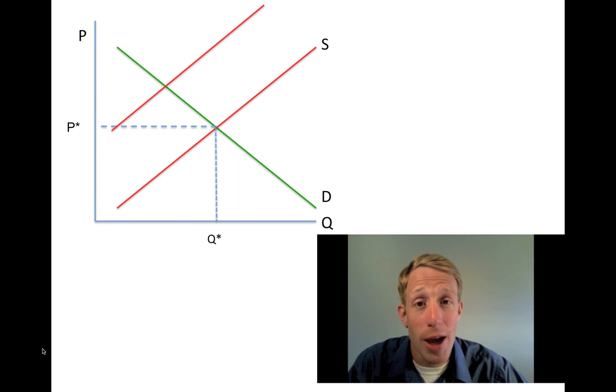But that price is not the price that the buyer pays and the price the seller receives. There's a difference between the two. This price is now the price the buyer pays. The buyer is going to pay a higher price, a price above P star, which was the equilibrium price. So Pb is the price the buyer pays.